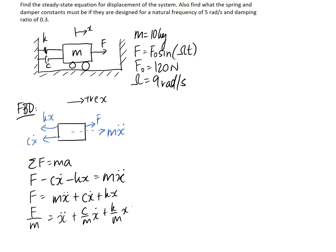Remember that we're trying to find what C and K are this time. We have the additional information that we're aiming for a natural frequency of 5 radians per second — that's omega-n — and a damping ratio of 0.3. We can still use our general form of the equation, which has these two values in it, and this time we're working backwards to find C and K.